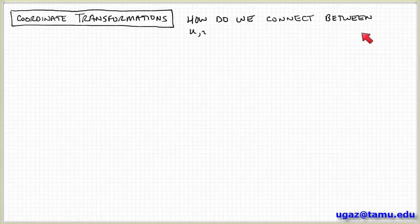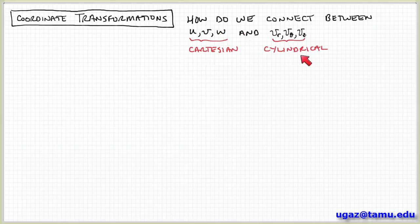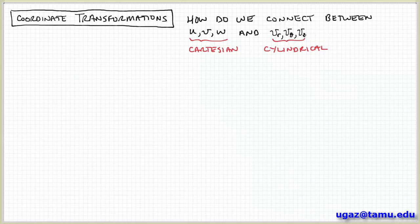Now I want to ask a different question. I want to ask how we can map a velocity vector expressed in terms of Cartesian coordinates with components u, v, and w in the x, y, and z directions, and map that to cylindrical coordinates where the same velocity vector can be expressed in terms of components vr, vtheta, and vz in the r, theta, and z directions.